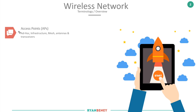First of all we need to understand the terminology of access points, something we spoke about already in our infrastructure class. An access point is effectively a dedicated device that allows our wireless stations — whether that's phones, laptops, or tablets — to communicate with a central network through radio frequencies.